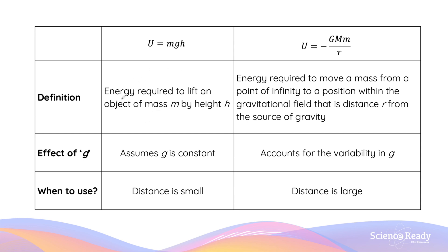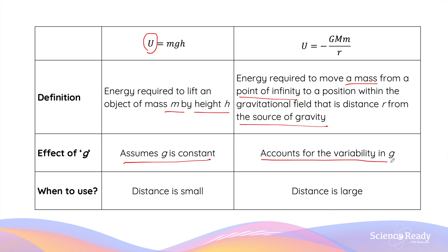Since the reference point is redefined in the new equation, the definitions of the two equations for gravitational potential energy are different. In the old equation, u is the energy required to lift an object of mass m by a height of h meters above the ground. In the new equation, this is the energy required to move a mass from a point at infinity to the point within the gravitational field at distance r from the source of gravity. The old equation is valid when talking about small distances as it assumes g is constant, while the new equation accounts for the variability of g and should be used when the distance is large.